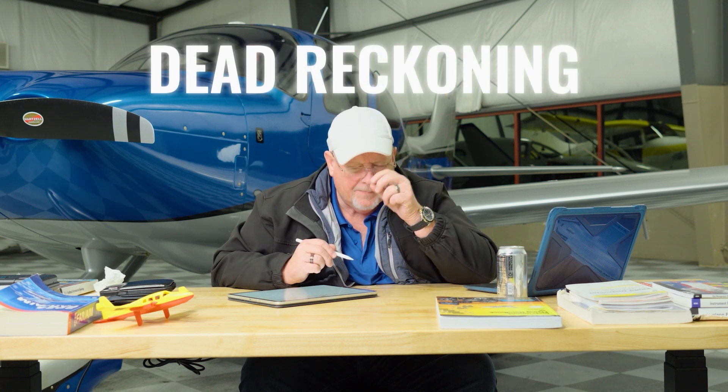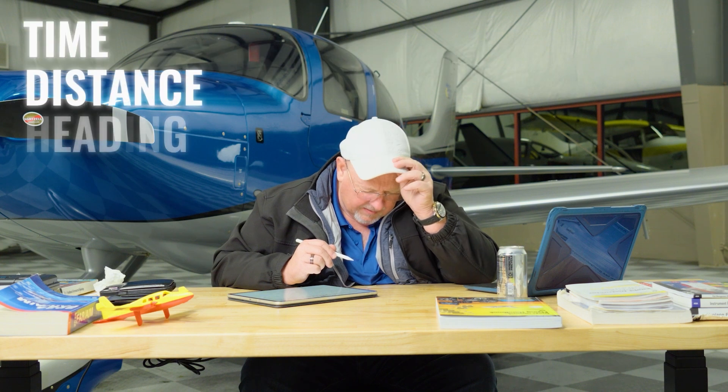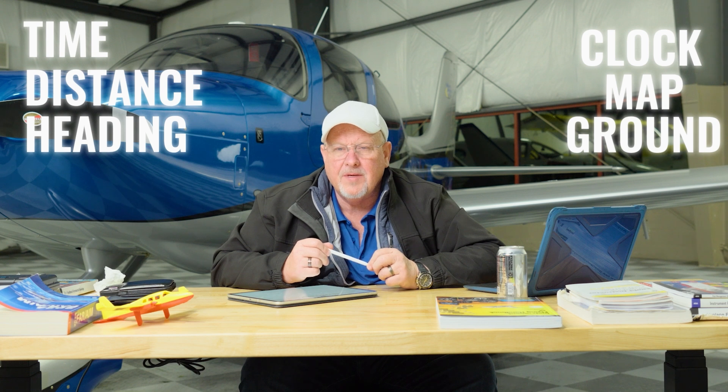Dead reckoning is all about time, distance and heading. And when we're flying, we look from the clock to the map to the ground. Time, distance, heading, clock to map to ground.